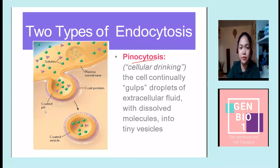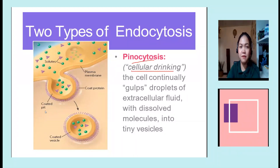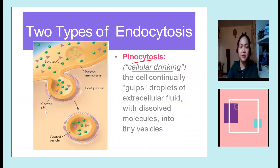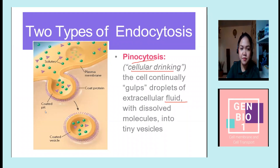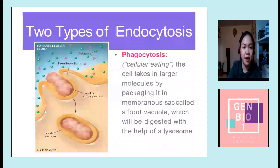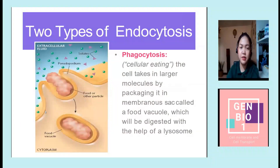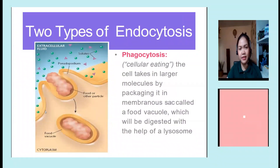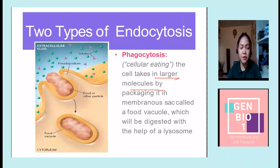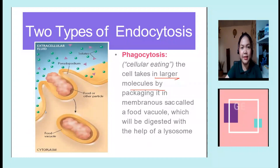There are two types of endocytosis. Pinocytosis, or cellular drinking — the cell gulps droplets of extracellular fluid with dissolved molecules into tiny vesicles. And phagocytosis, or cellular eating — the cell takes in larger molecules by packaging them in a membranous sack called a food vacuole, which is later digested by the lysosome.